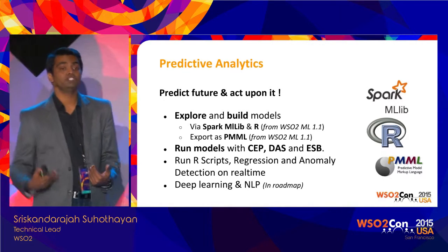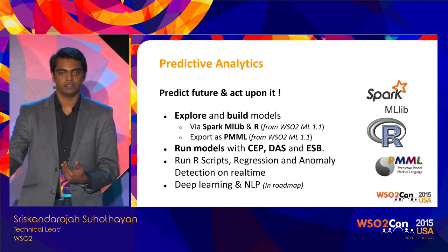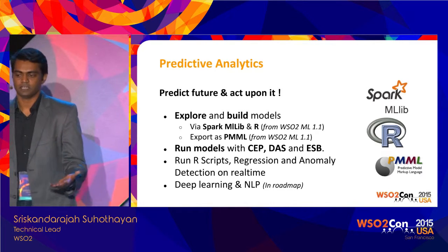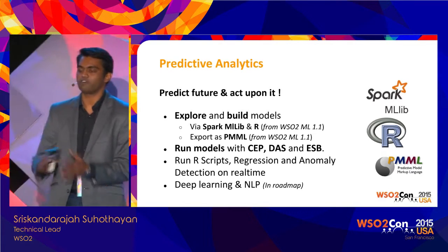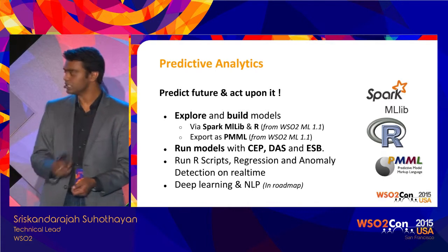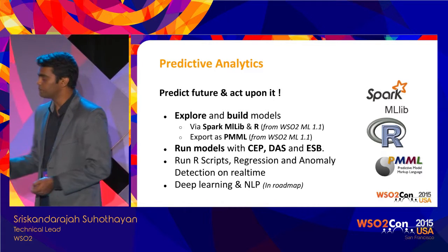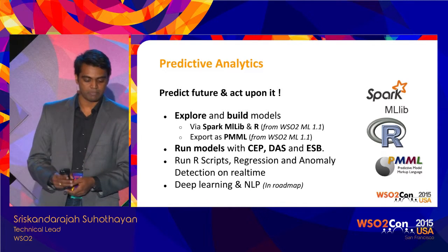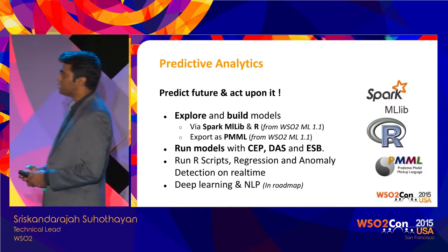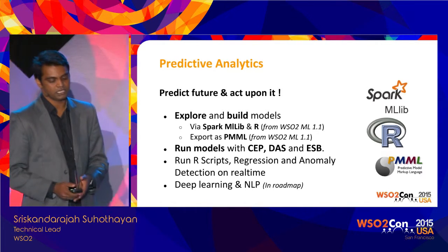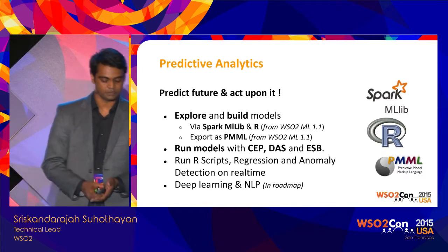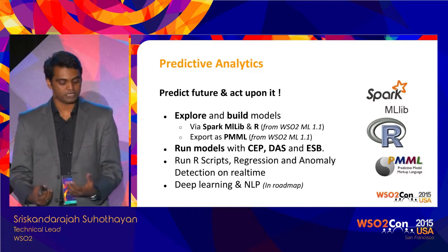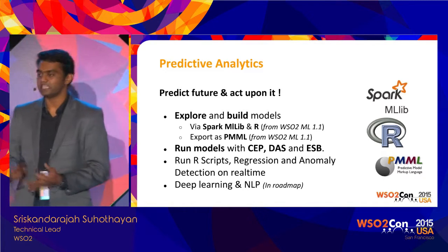Now we know what's happening in real time, but we should also be able to predict the future. For example, if a customer is looking at a bike and a helmet, maybe they want a full biking experience, so we can give offers in that area. With WSO2 Machine Learner capabilities we have the capacity to explore data and build models using Spark MLlib. We're also adding R and PMML support in the next release. Once models are built, we can run them with CEP to detect and act upon real-time event flows.